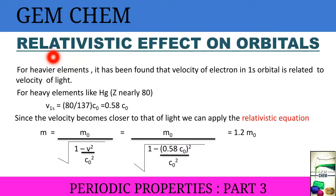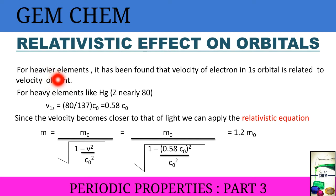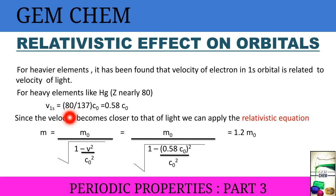What is the relativistic effect? This effect is basically observed for heavier elements. It has been found that the velocity of electrons in the 1s orbital is related to the velocity of light. For example, if we take the heavy element mercury, which has atomic number Z nearly equal to 80, then the velocity of the 1s electron is equal to (80/137) × c₀, which is nearly about 0.58 c₀, where c₀ is the velocity of light.